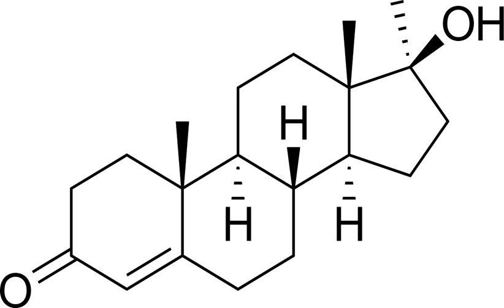Methyltestosterone was discovered in 1935 and was introduced for medical use in 1936. It was synthesized shortly after the discovery of testosterone and was one of the first synthetic AAS to be developed. In addition to its medical use, methyltestosterone is used to improve physique and performance, although it is not as commonly used as other AAS for such purposes due to its androgenic effects, estrogenic effects, and risk of liver damage. The drug is a controlled substance in many countries and so non-medical use is generally illicit.